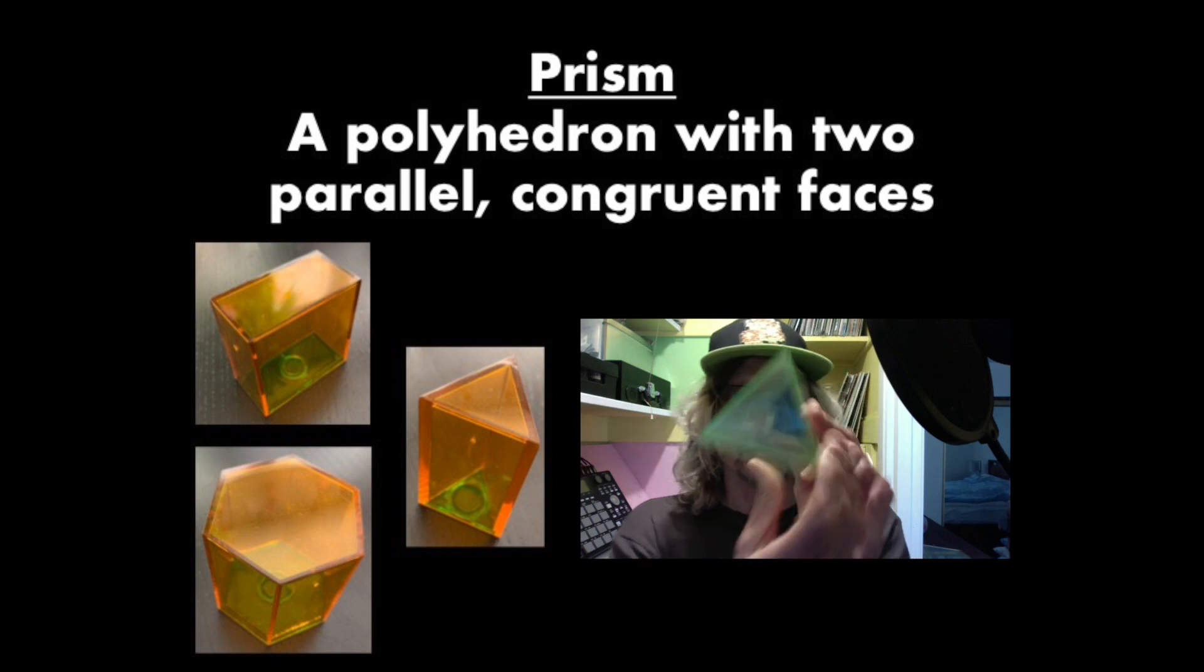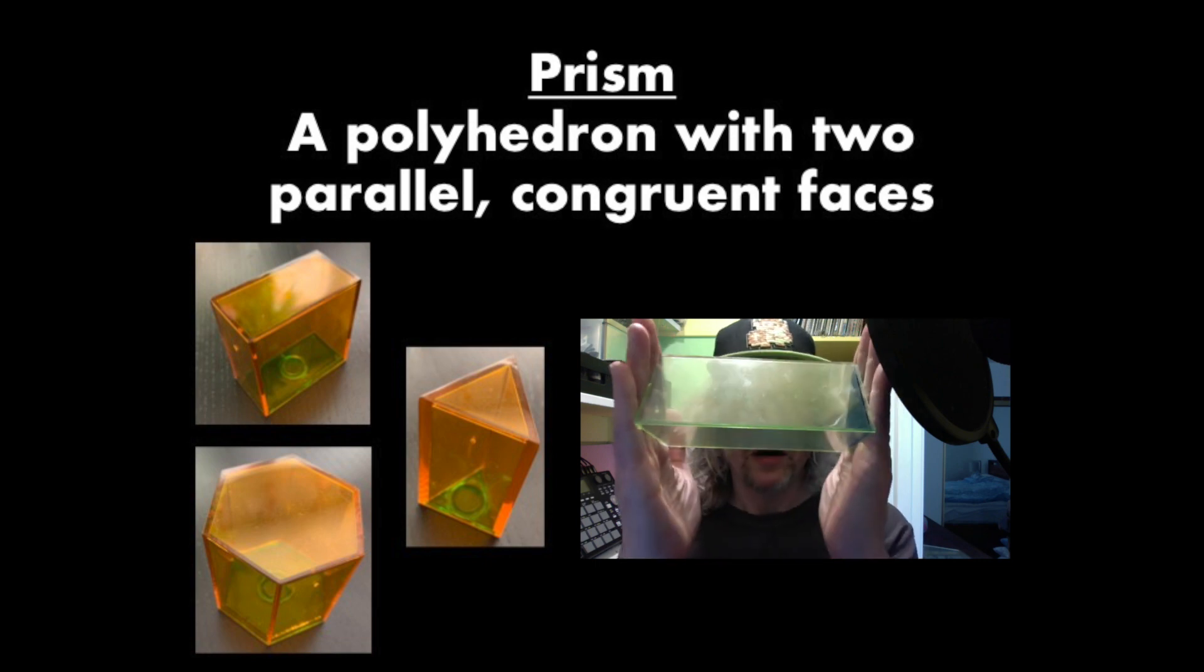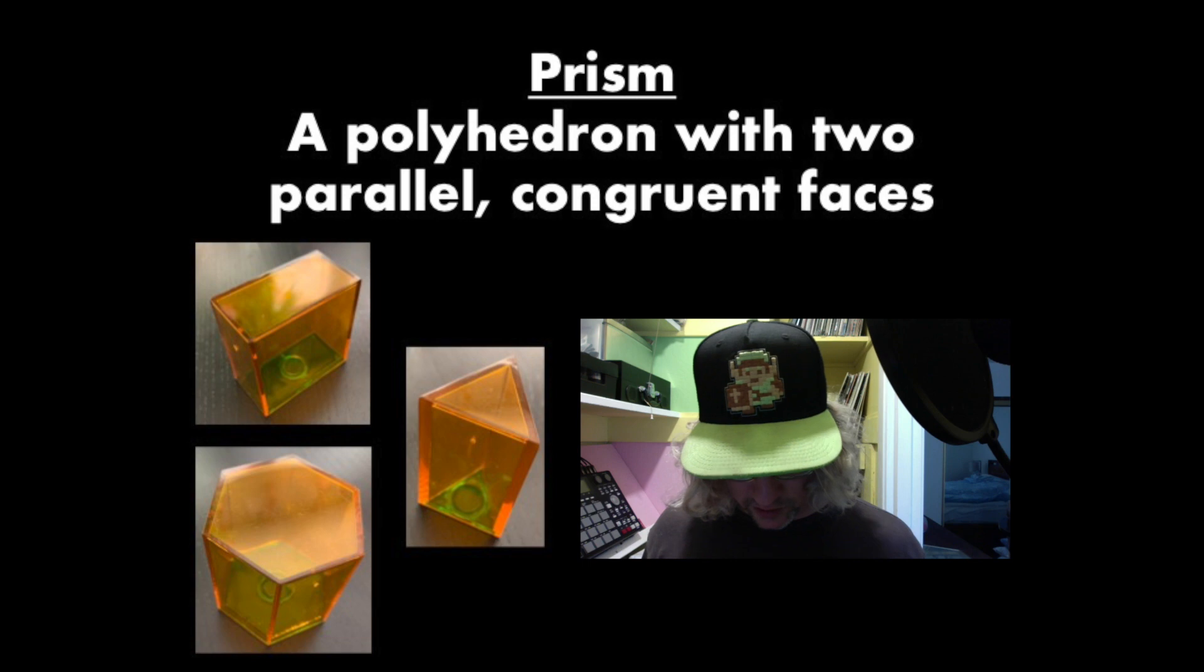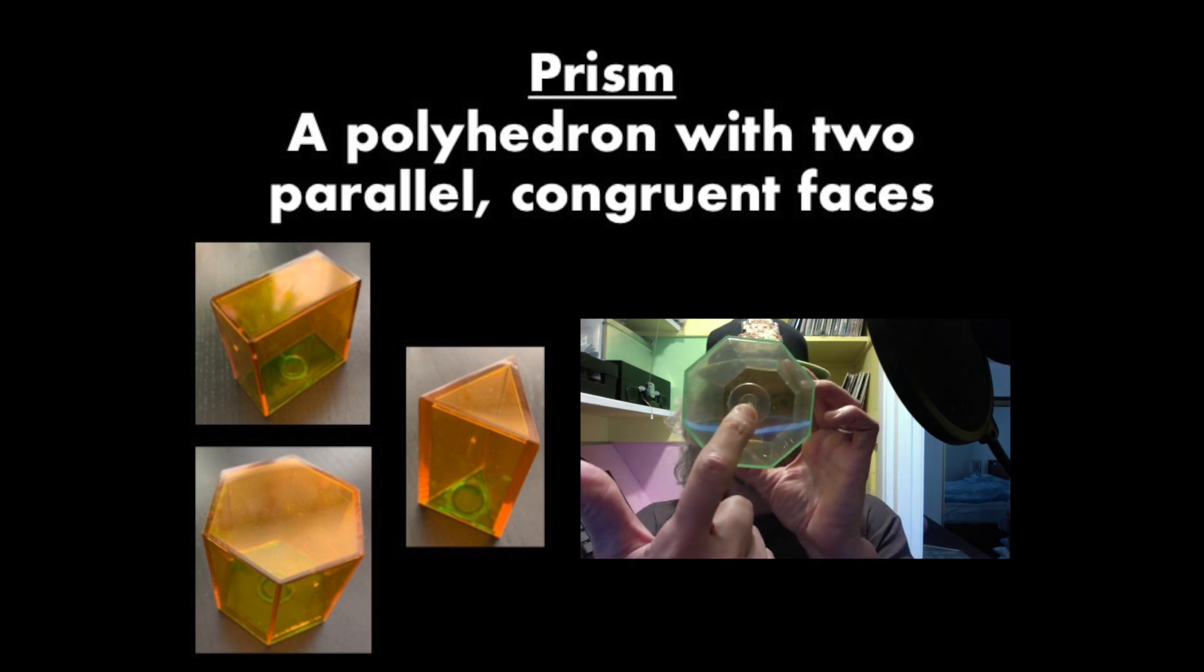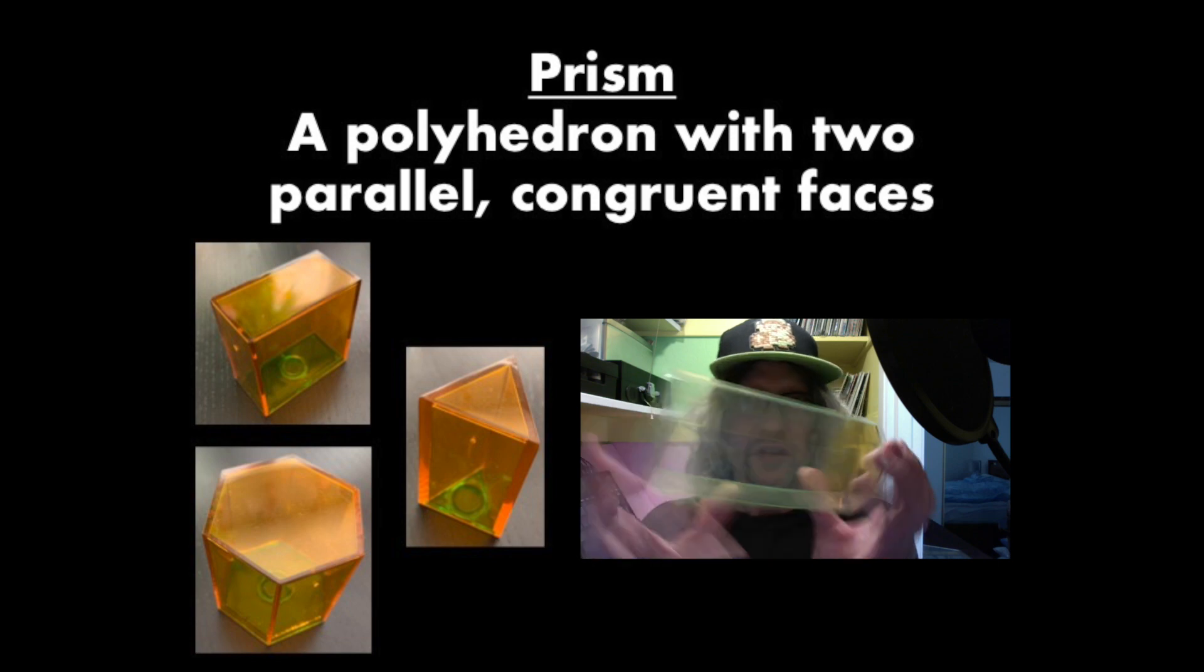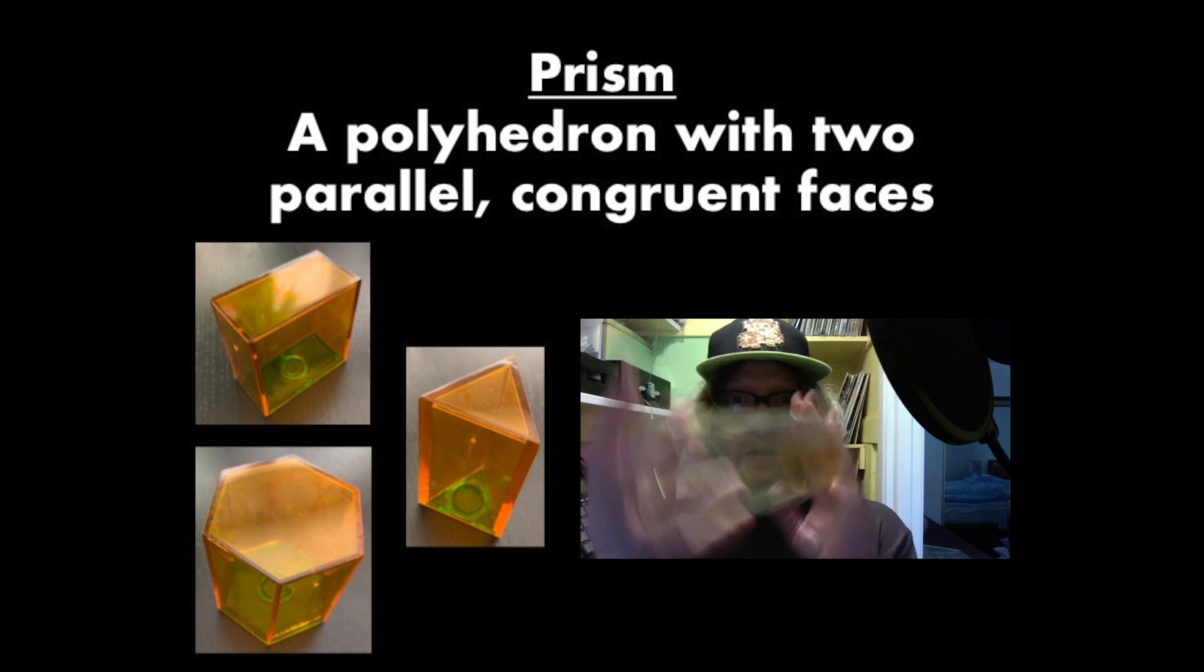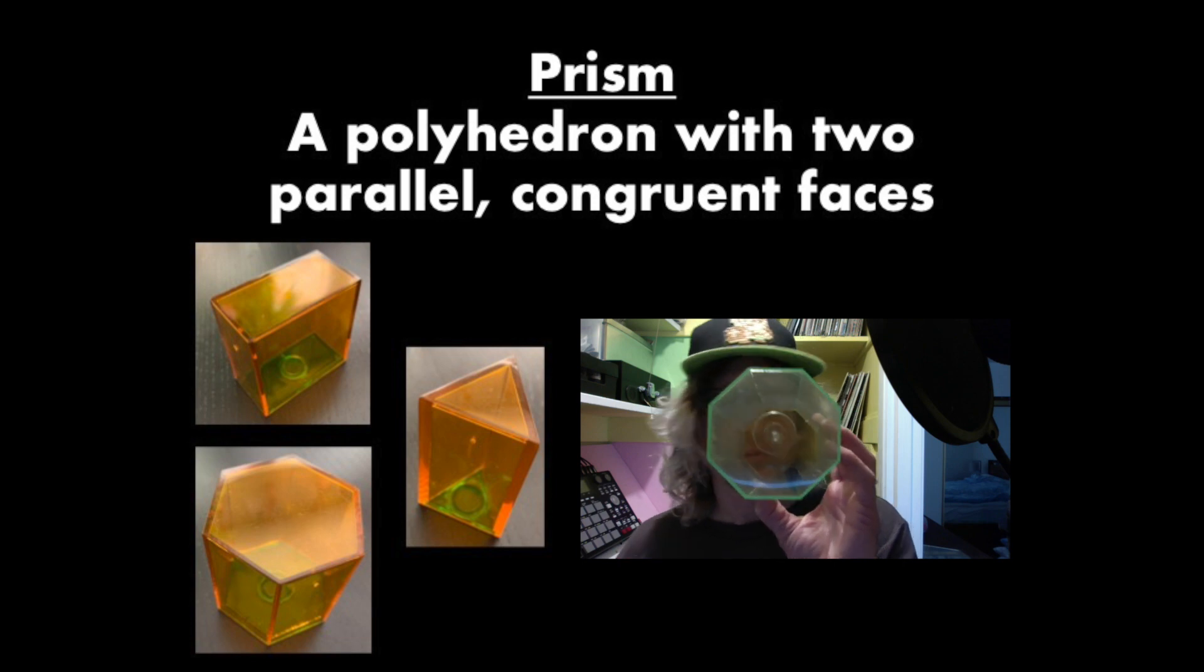A bigger triangular prism. Triangle, congruent triangle, parallel, triangular prism. How about this one right here? We have an octagon and an octagon there. They are congruent. They're parallel. That makes this a prism. And we name a prism after its base. So this is an octagonal prism.